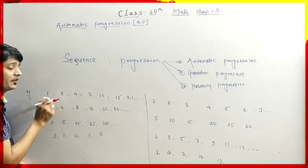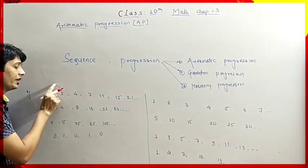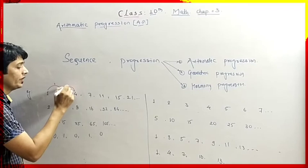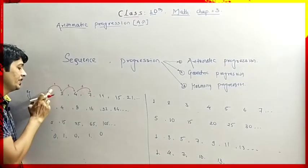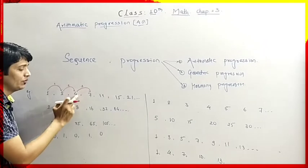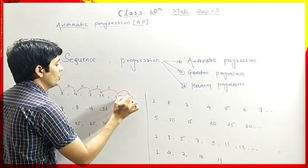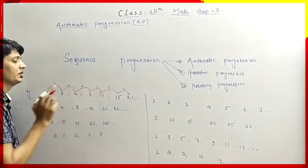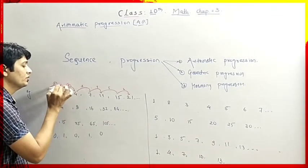Between two consecutive terms, the difference is 1, then 2, then 3. If we add 1 to 1 we get 2, then 2 plus 2 is 4, then 4 plus 3 is 7. So the number added increases by 1 each time — we added 1, then 2, then 3, then 4. Here we are adding a greater number each time to get the next number. The difference between two consecutive terms is not equal in this sequence.